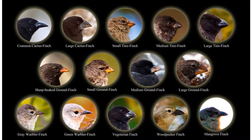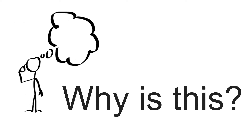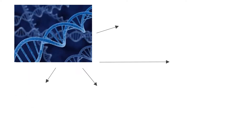Darwin studied many different plants and animals in the Galapagos Islands, but his study of finches was very important to his research. There are multiple kinds of Galapagos finches that all look very different. Why is that? It is because of their DNA.